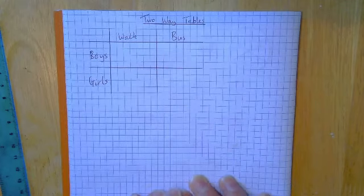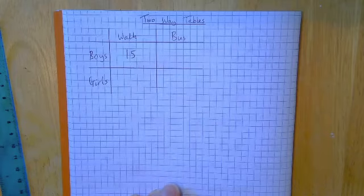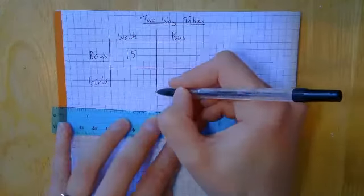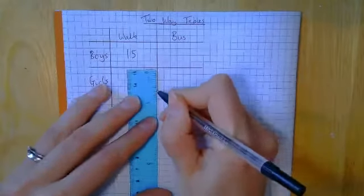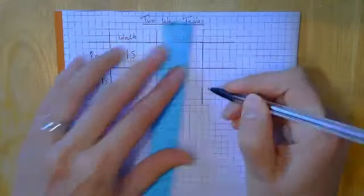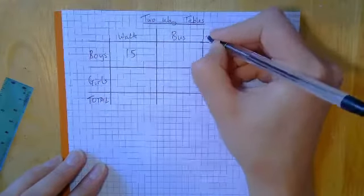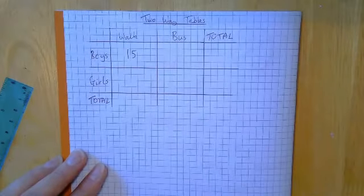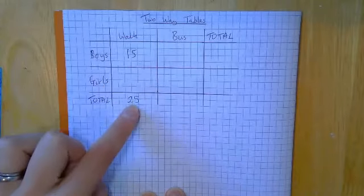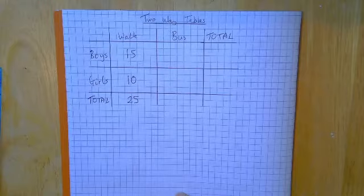So they might tell us that 15 boys walked to school. So into here, we would put 15. They might tell us that in total, 25 people walked to school. Now, at the minute, our table isn't equipped for that. So what I'm going to suggest is that we add on, and often you'll need to do this, add on what we call a total column and a total row. So sometimes they don't actually give you this, which is why I didn't put it on to start with. I want to make the point that sometimes you would have to draw this onto your table. So I'm going to call this total. So what did we say? We said that in total, 25 people walked to school. Now, with that information, we can now fill in this box. We know that there were 25 people in total. 15 of them are here. So we've got 10 people here, 10 girls that walked.